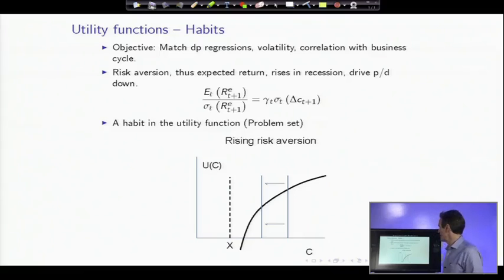Our main ingredient, remember our Hansen-Jagannathan main equation: the market Sharpe ratio equals risk aversion times variance of consumption growth. We know the top varies, that's the dividend yield regressions. The volatility of returns does vary also, but not in lockstep with the top, so the market Sharpe ratio varies over time and is higher in recessions. On the right-hand side, the conditional variance of consumption growth doesn't vary a whole lot, so we need a mechanism to make risk aversion higher in recessions, and that's what this model does.